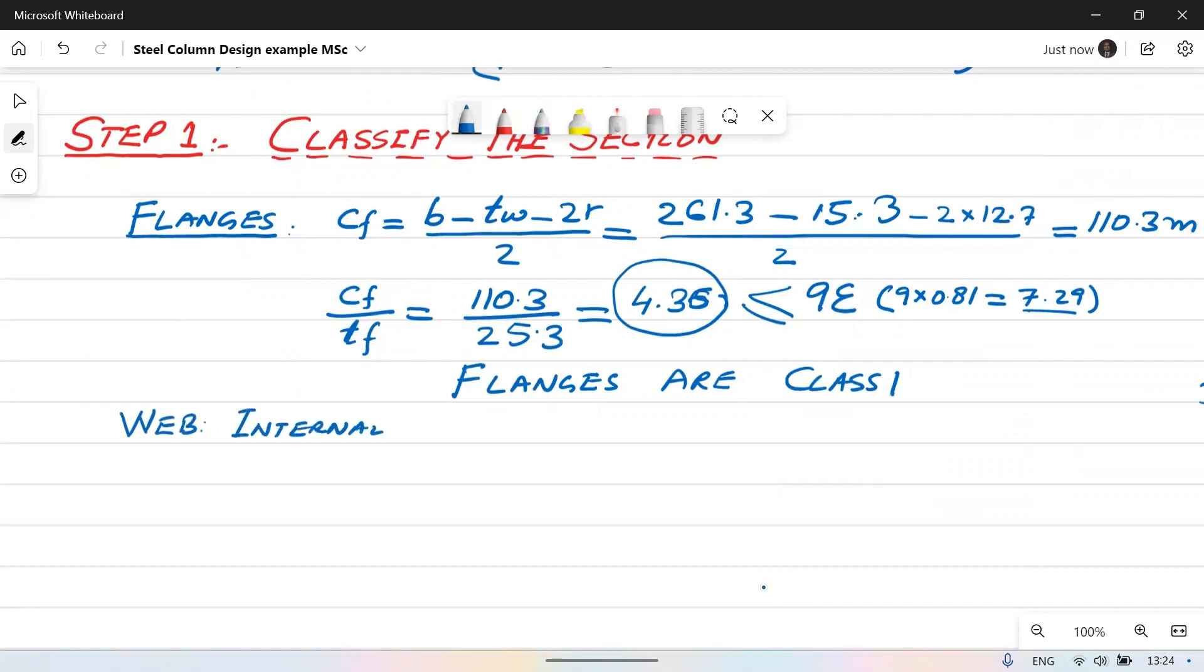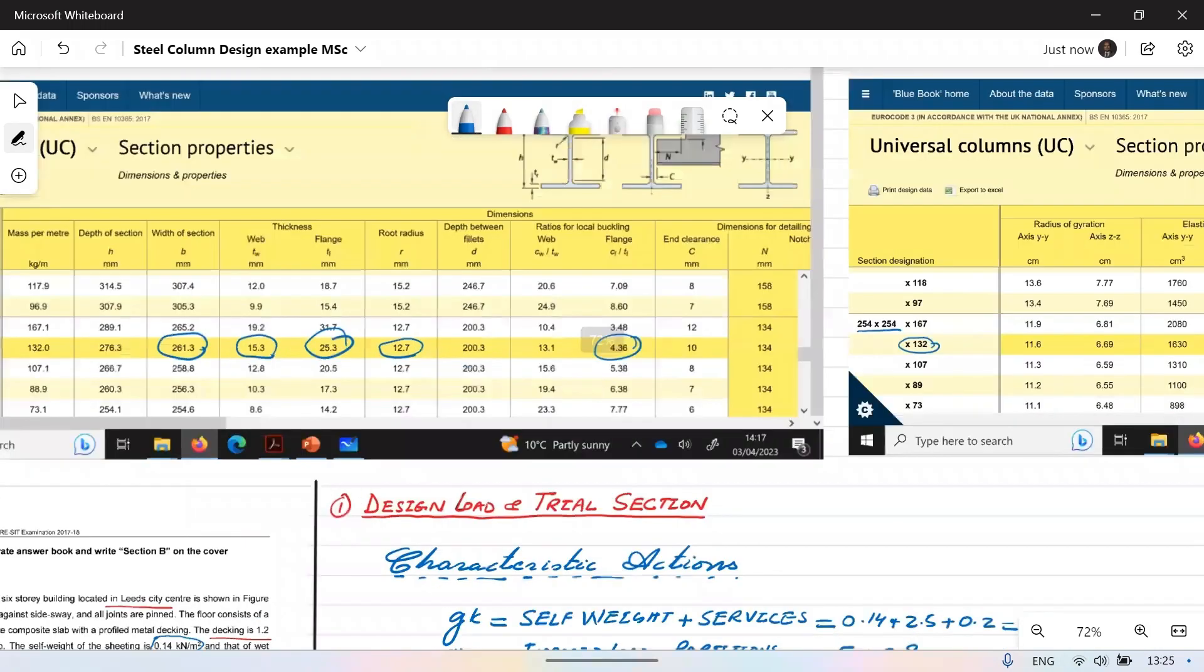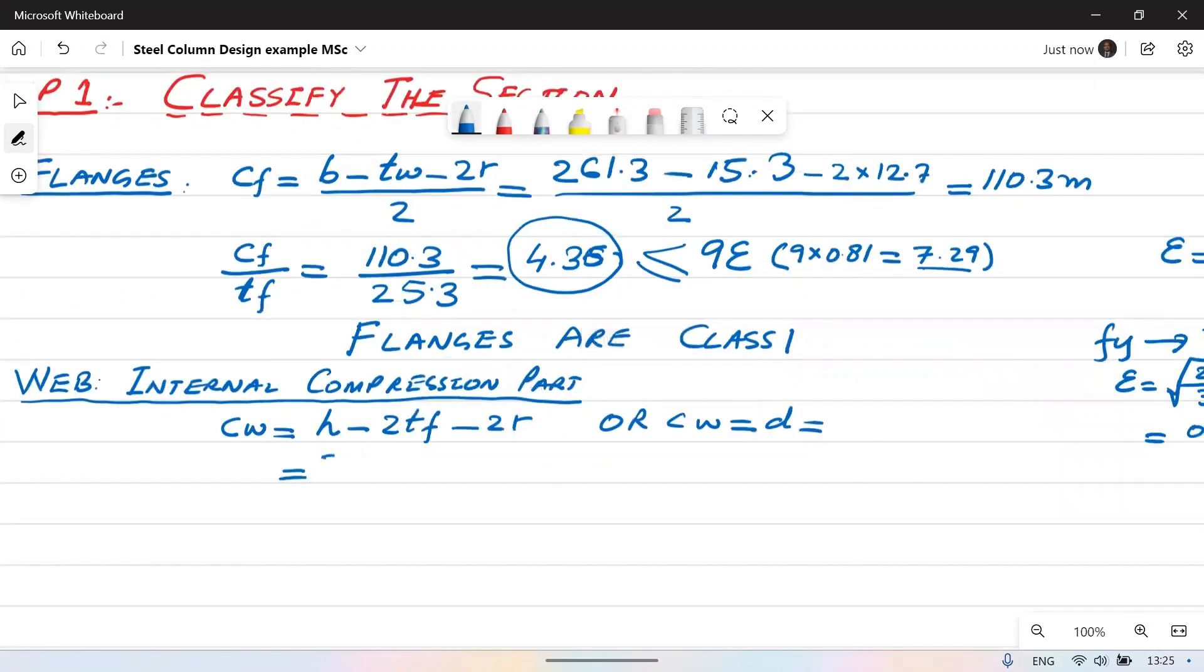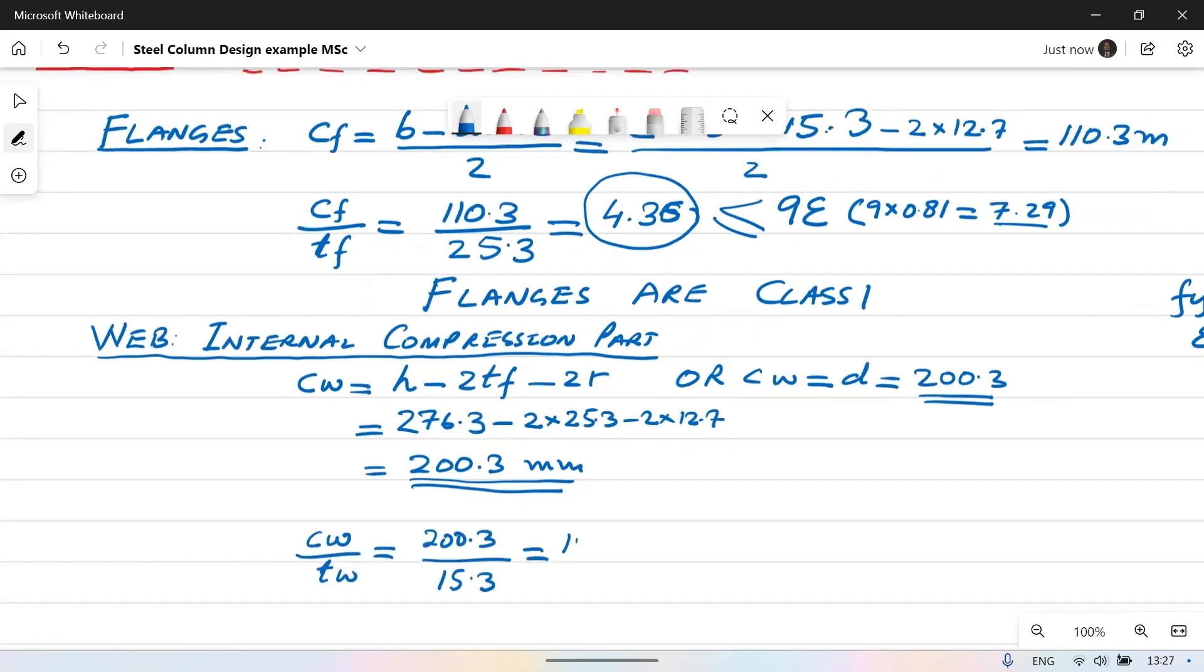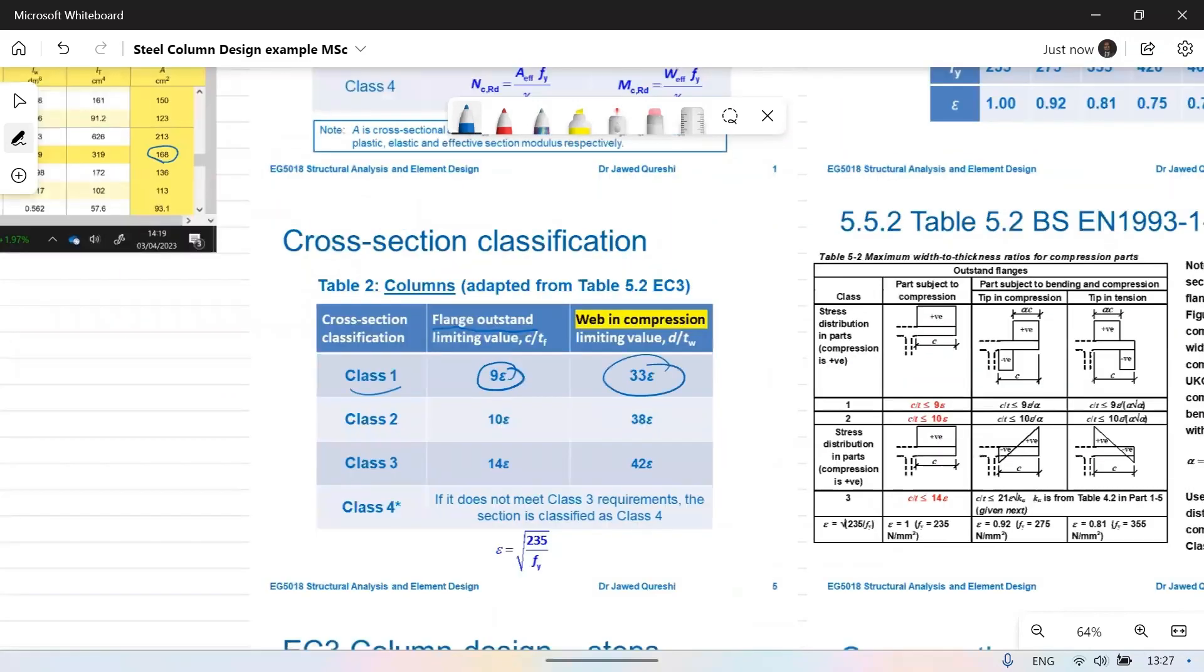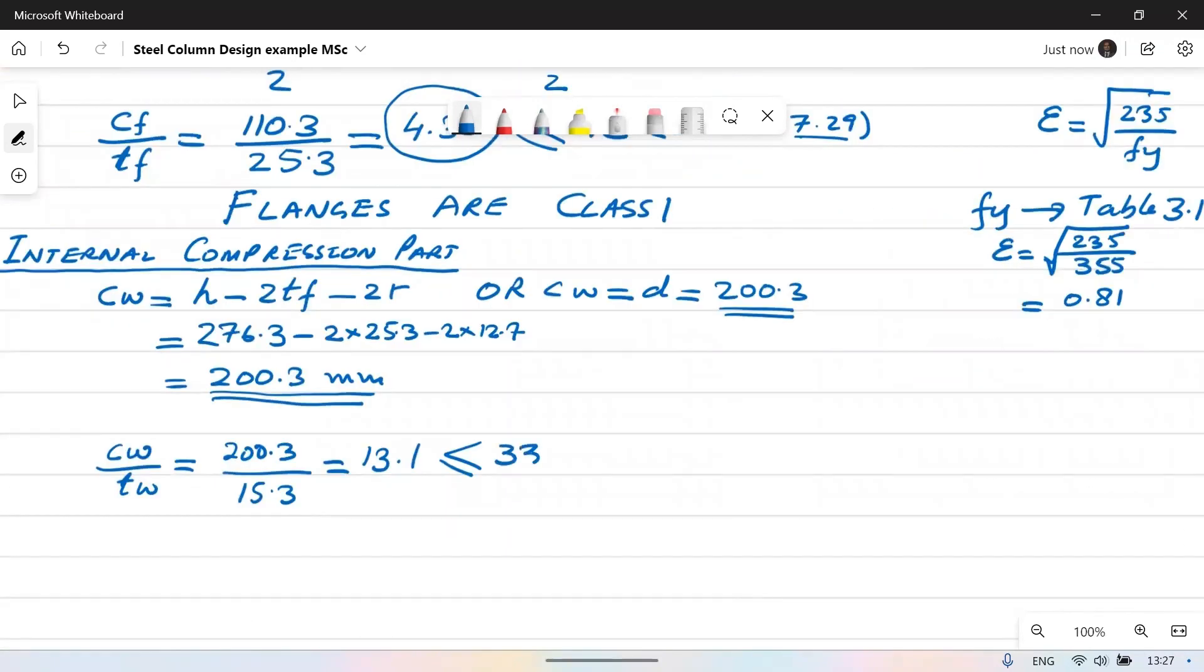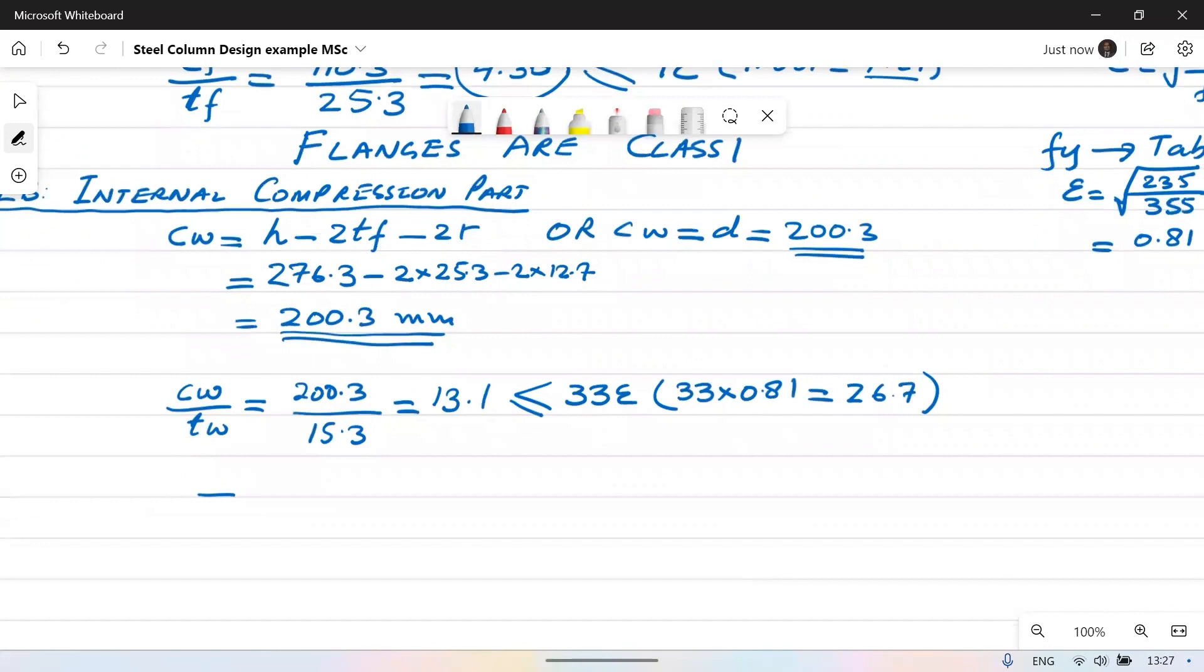How will we classify web or internal compression part? C_W is H minus 2T_F minus 2R. C_W is also equal to D where D is depth between the fillets which can directly be obtained from section table. When you place all these values you obtain C_W as 200.3 and then we work out C_W over T_W which comes out to be 13.1 and then we compare it with the limiting value which is 33 epsilon for class one general compression parts. C_W over T_W 13.1 is less than 26.7. So web is class one. Overall classification is class one.